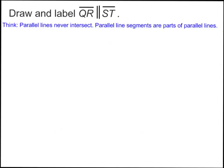In your notes, draw and label line QR to be parallel to line ST. Remember, parallel lines never intersect, and parallel line segments are parts of parallel lines. Pause the video and draw it. You should have made a line segment labeled QR parallel to line segment ST.